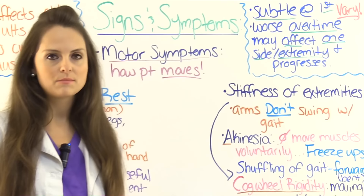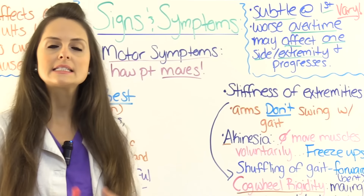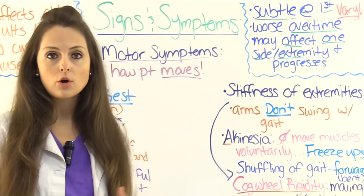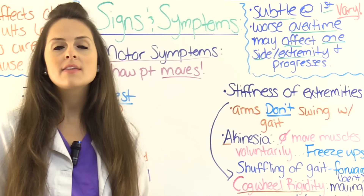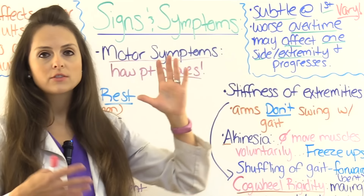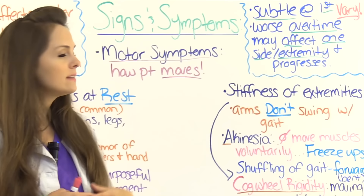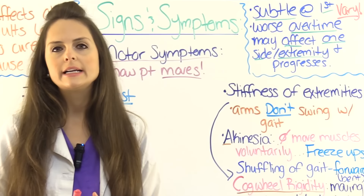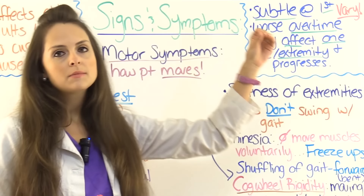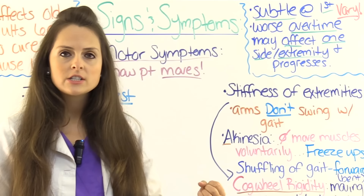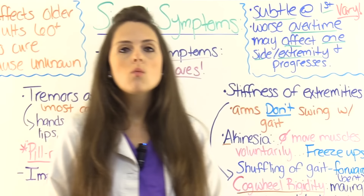In the early stages of Parkinson's disease the signs and symptoms tend to be subtle, so the patient or people around them will not notice them. However, as time goes on the signs and symptoms will become worse and will affect their mobility. The signs and symptoms tend to vary — every patient will be different with what they experience. Also, a sign or symptom can start out in one extremity or just one side of the body in early stages and then progress throughout the whole body.